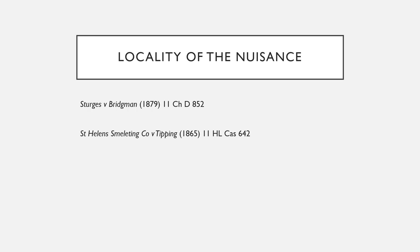Looking at locality of nuisance, we can look at Stages v Bridgman. This is saying that the nuisance depends on the area. So if you're in a city you're expecting to hear a lot of noise such as cars passing by or the tube running, whereas if you're in the countryside you may not expect to hear such things — there are different nuisances in different areas.